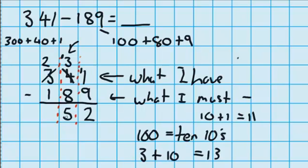And now I'm on to the hundreds column. I've got 2 hundreds. I need to take away 100. Well, that'll just leave me with 100. So the answer to 341 minus 189 is 152.